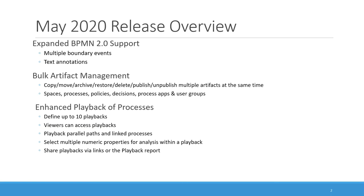There have been many changes to the playback tool. Viewers can now access the playback tool. Up to ten playbacks can be created for each process. End-to-end playbacks can be created that span multiple linked processes. Users can step through parallel paths within their process playbacks. And playbacks can be easily shared now using links or the new playback report. Let's take a look at all of this in more detail. First up, I'd like to share a couple of our BPMN enhancements.